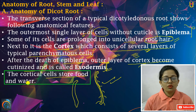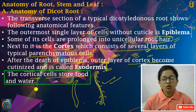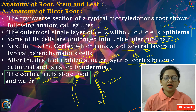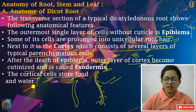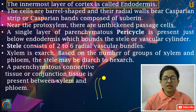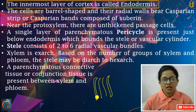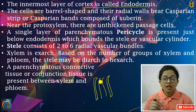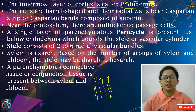The cortical cells store food and water. Cortex tissue, ab kisi cell se toh milke bana hoga. Cortex cells — cortical cells se milke bana hota hai. Aur cortical cells ka kaam kya hota hai? Food aur water ko store karna. Now, the innermost layer of cortex is called endodermis. Abhi humne kya padha? Jo cortex hai, woh several layers hoti hain — bahut sari. Jo outermost cortex hogi, use toh hum log exodermis keh diya. Lekin jo innermost layer cortex ki hogi, unhein hum log kya bolenge — endodermis.